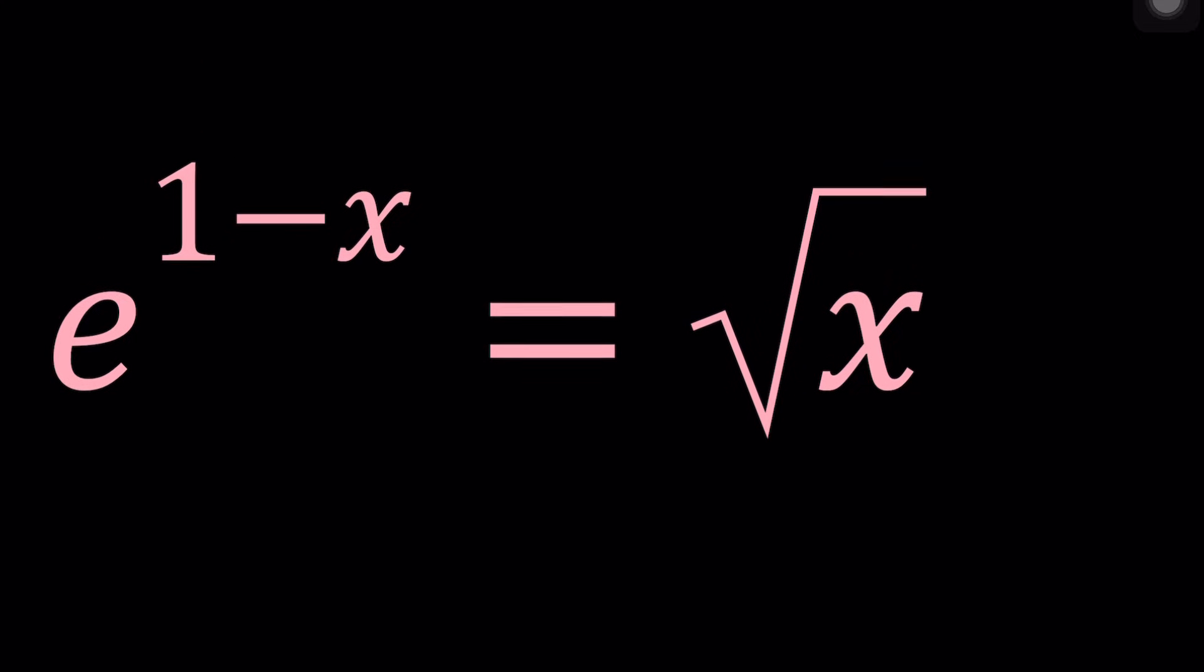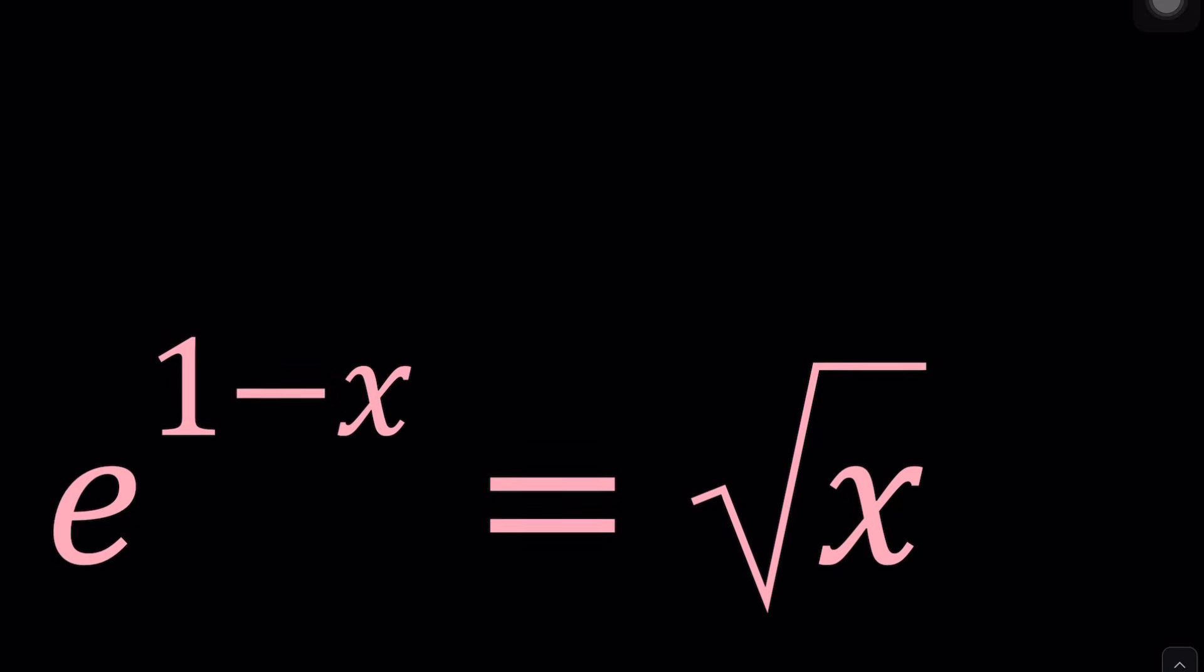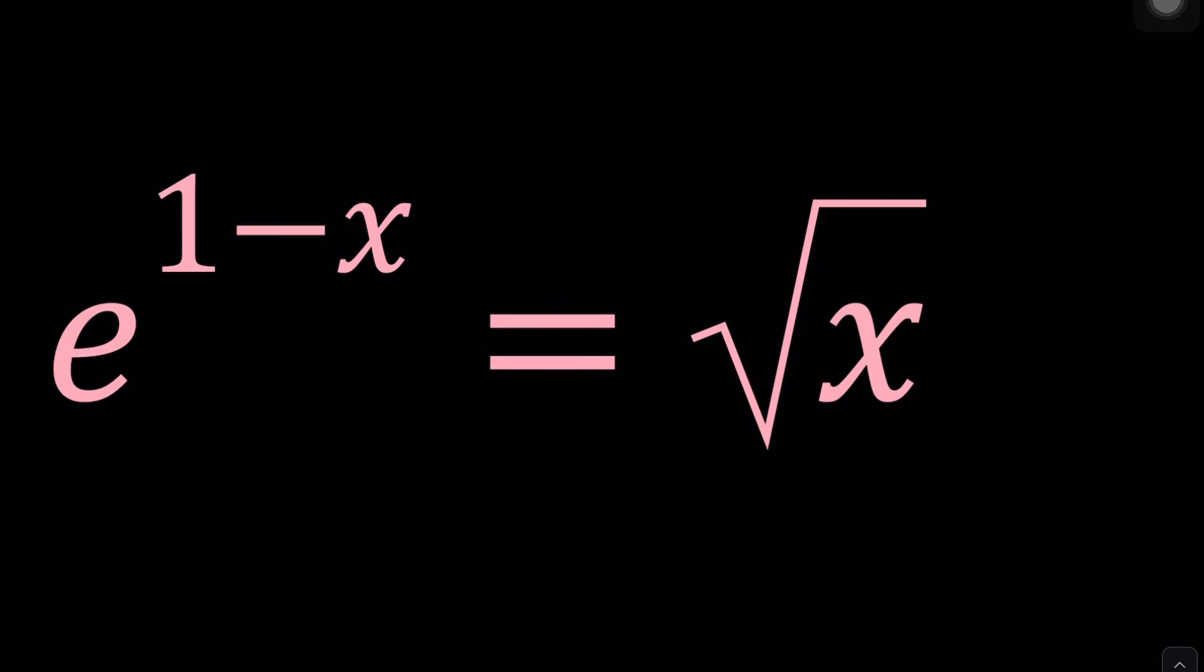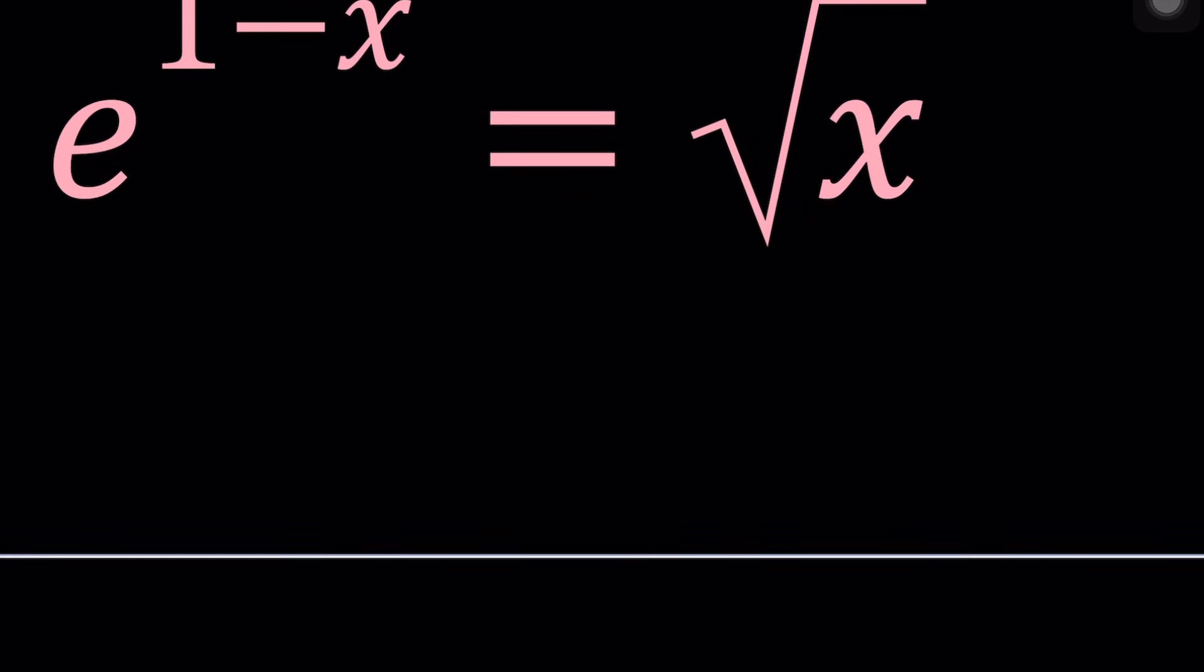So to be able to solve this problem again, like I said earlier, it's okay to guess and check. But we need to make sure that we are finding all the solutions. So let's start by splitting it up. e to the power 1 minus x can be written as e to the power 1 divided by e to the power x. And that is equal to square root of x. This is the point where I multiply or cross multiply and I get square root of x multiply by e to the power x equals e. Nice.